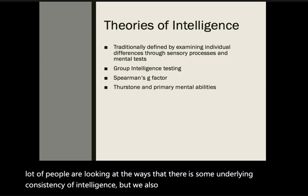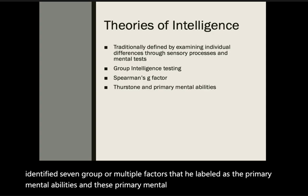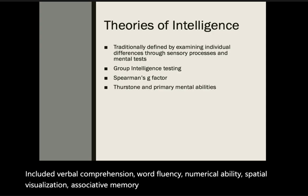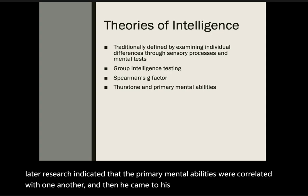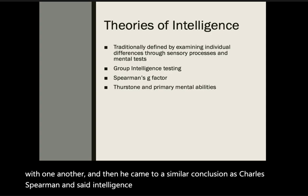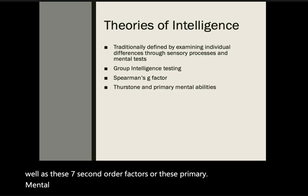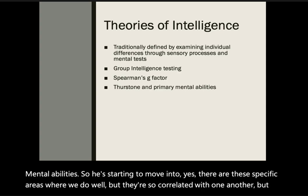We also have Lewis Thurstone, who identified seven group or multiple factors he labeled as the primary mental abilities. These included verbal comprehension, word fluency, numerical ability, spatial visualization, associative memory, perceptual speed, and reasoning. His later research indicated that the primary mental abilities were correlated with one another, and he came to a similar conclusion as Spearman — that intelligence can be interpreted as a general factor as well as these seven second-order factors. So while there are specific areas where people do well, they are so correlated that there must be some general factor of intelligence.